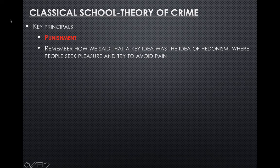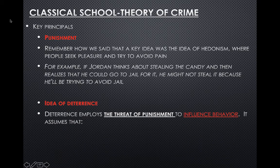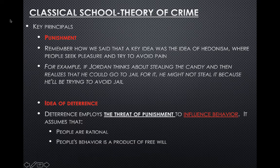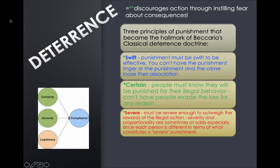Remember hedonism — people seek pleasure and try to avoid pain. Jordan thinks about stealing candy, then realizes he could go to jail, so he might not steal it because he's trying to avoid jail. This introduces deterrence: deterrence employs the threat of punishment to influence behavior, assuming people are rational, have free will, and are hedonistic. It discourages action by instilling fear about consequences. The three key principles are that deterrence must be swift, certain, and severe: punishment should be swift and effective; people must know they will be punished; and it must be severe enough to outweigh the rewards of the crime.